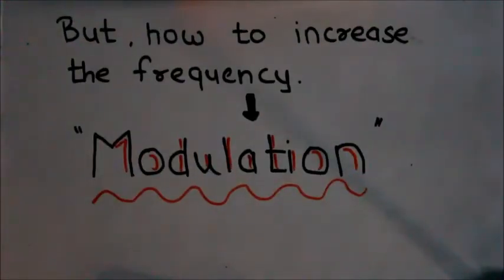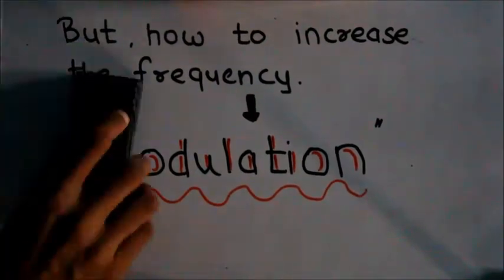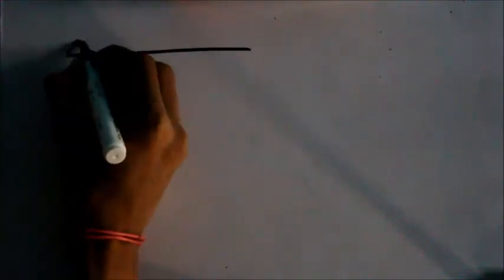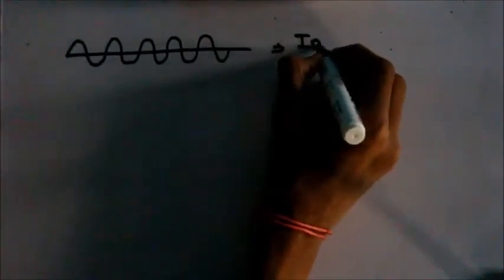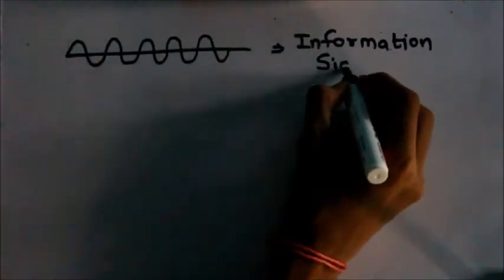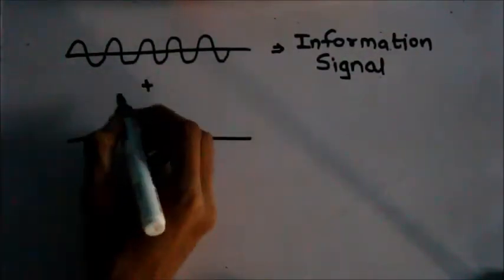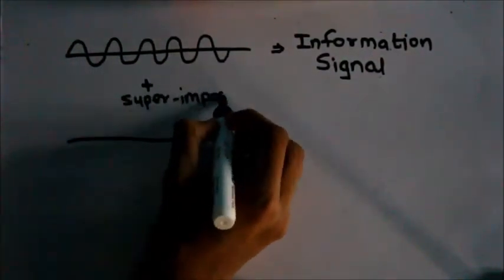But how to increase the frequency of the signals? The answer is modulation. But in modulation we do not actually increase the frequency of the signals. What we actually do is we take our information signals which is of low frequency and superimpose it on a carrier signal which is of very high frequency.